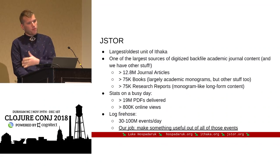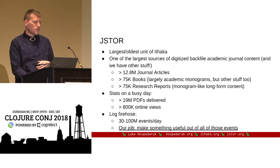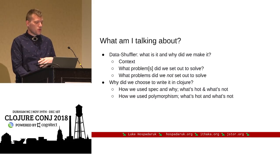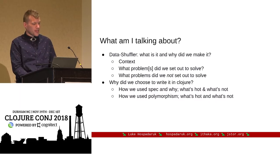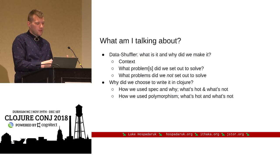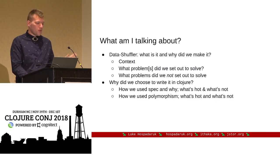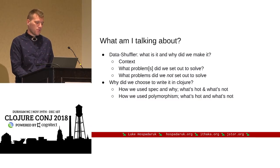My team is the data platform team, and our job is to help the organization make something useful out of that firehose, primarily for business analytics. What I want to cover today is what DataShuffler is, the context we built it in, what we're trying to solve, and explicitly what we're not trying to solve. I'll also talk about why we chose Clojure, Spec, and polymorphism.